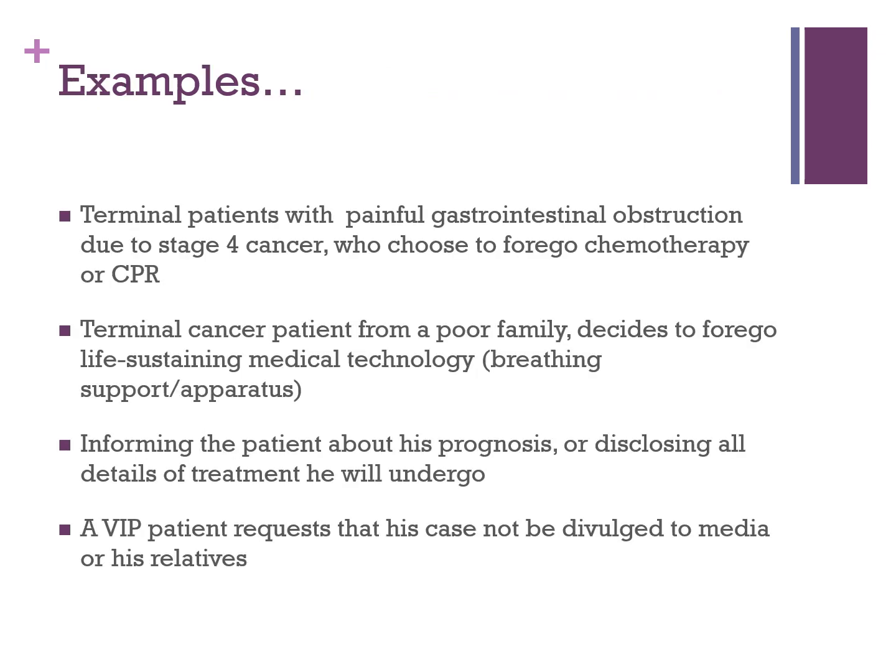Examples for informed consent include: terminal patients with painful gastrointestinal obstruction due to stage 4 cancer choosing to forgo chemotherapy or cardiopulmonary resuscitation, or a poor family deciding to forgo life-sustaining treatment. Also, informing a patient about their prognosis and disclosing all details of treatment, or a VIP patient requesting that his case not be divulged to media or his relatives.